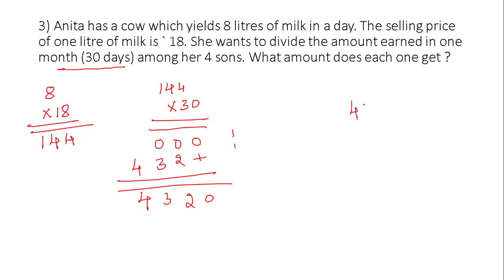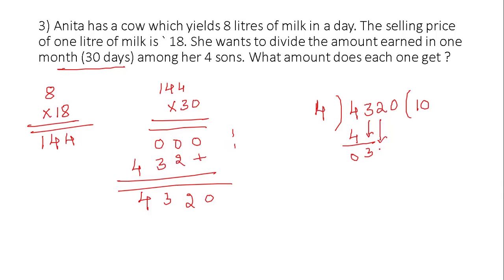4320 rupees in 30 days. She divides this amount among 4 sons, that means divided by 4. 4 ones are 4. 4 minus 4 is 0. Take this 3 here — we cannot group 3 as 4, therefore put 0. Take this 2 here — 32. 4 eights are 32. 2 minus 2 is 0, 3 minus 3 is 0. Take this 0 here — we cannot group 0 as 4, therefore put 0.